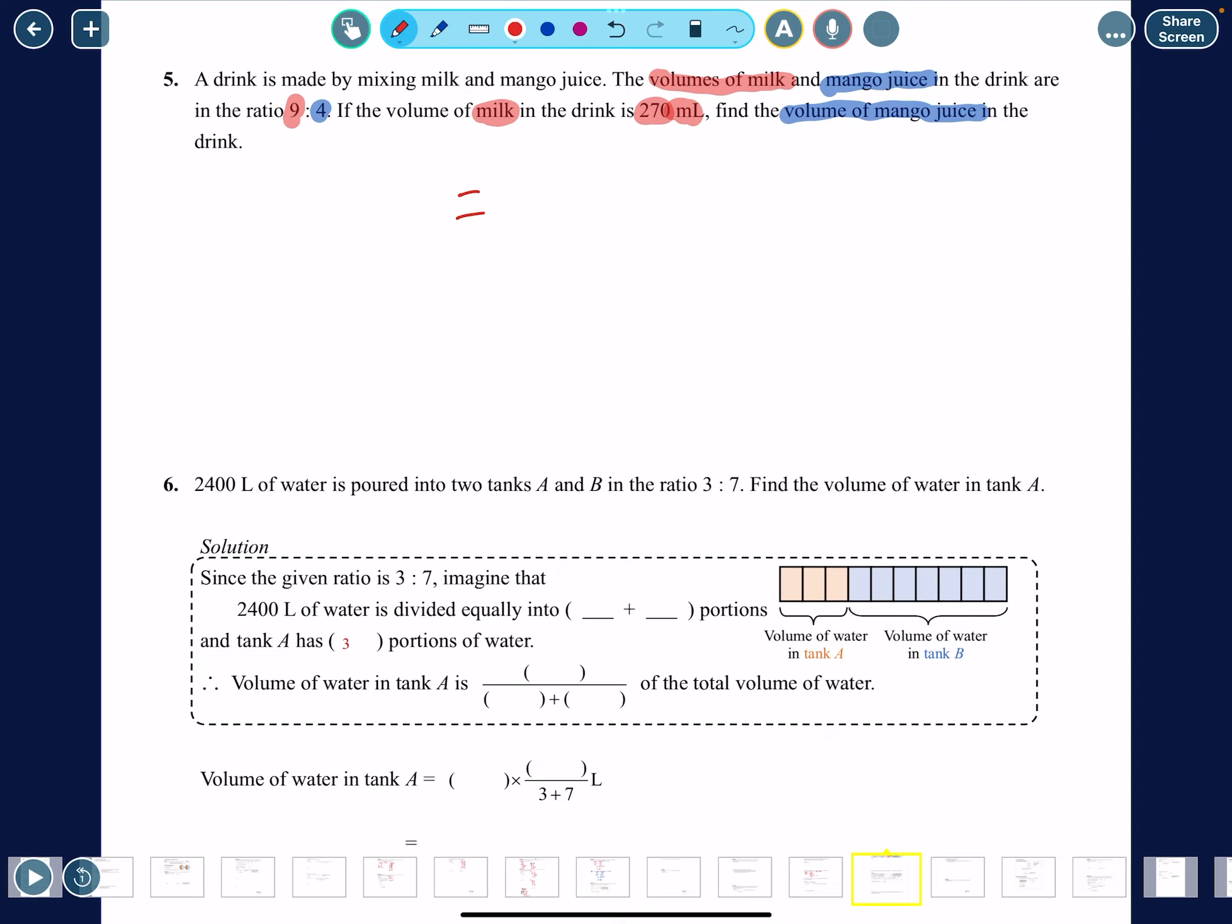This is where my ratio method is going to be so useful. We are finding the volume of mango juice. Mango, we put volume up here. What is the ratio for mango juice? 4. The total volume is not given here. What's given is the volume of milk: 270 ml, and the ratio of milk is 9. You've got to be careful - if it's not talking about total, you don't go like 4 plus 9. 270 is milk, which represents 9 only.